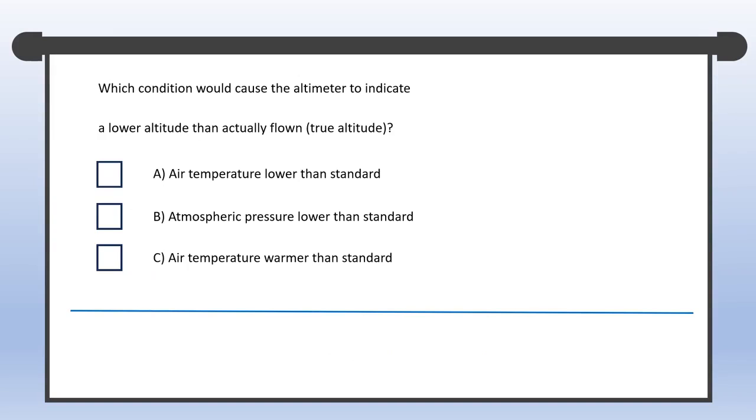Okay, which condition would cause the altimeter to indicate a lower altitude than actually flown? This time, we want the indicated altitude to be lower than actual altitude. Right off the bat, B gets the boot because we just witnessed that lower than standard pressure led to a higher indicated altitude.